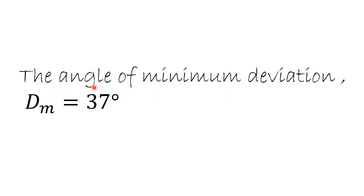Hence, the result: the angle of minimum deviation, denoted as dm, is 37 degrees. That's it for today's class. If you have any confusion, please don't hesitate to ask and I will re-explain it to you. Thank you.